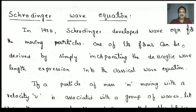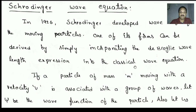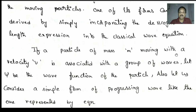One of its forms can be derived by simply incorporating the de Broglie wavelength expression into the classical wave equation. He developed an equation by incorporating the de Broglie wave equation into the classical wave equation. If a particle of mass m moving with velocity v is associated with a group of waves, suppose a particle is trapped in a wave.